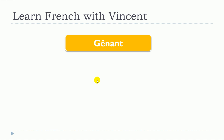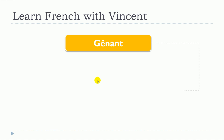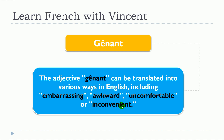This lesson is about gênant. The adjective gênant can be translated into various ways in English, including embarrassing, awkward, uncomfortable, or inconvenient.